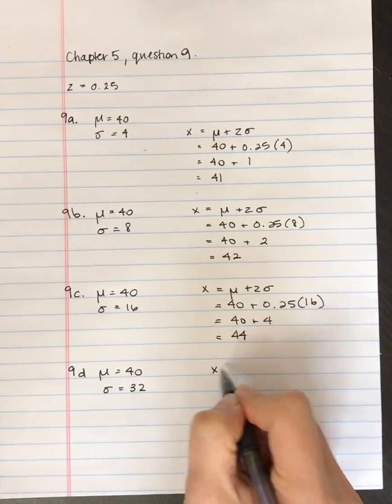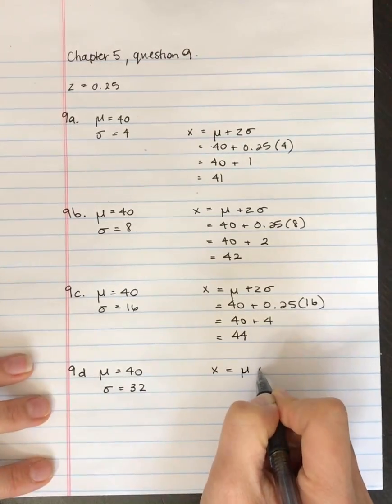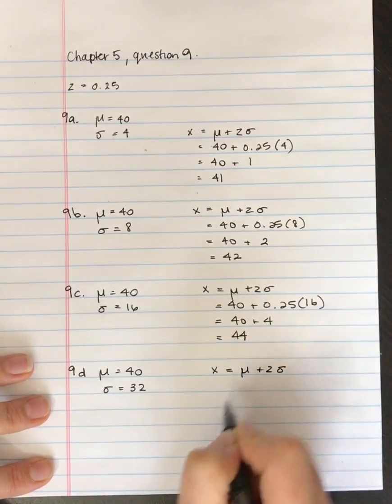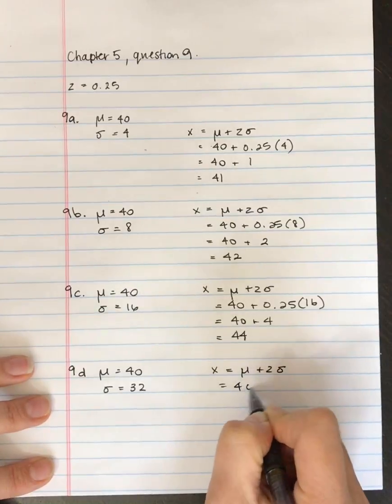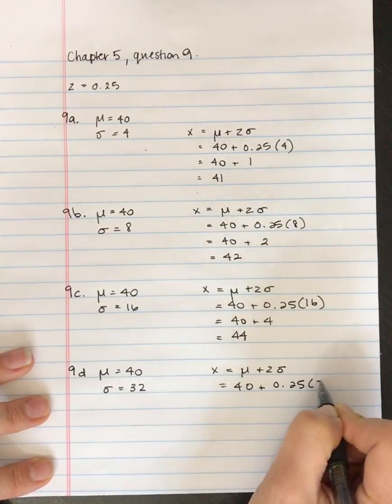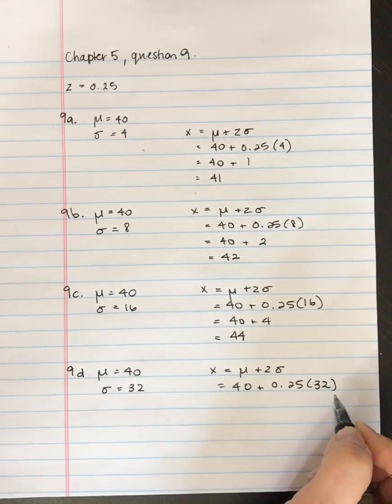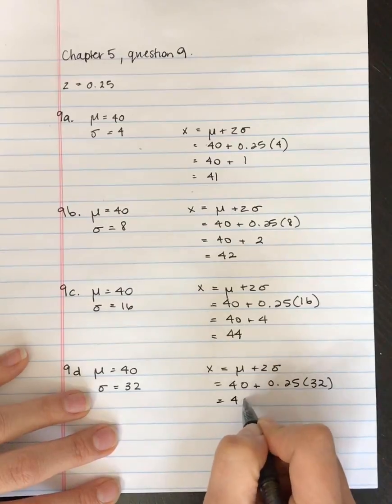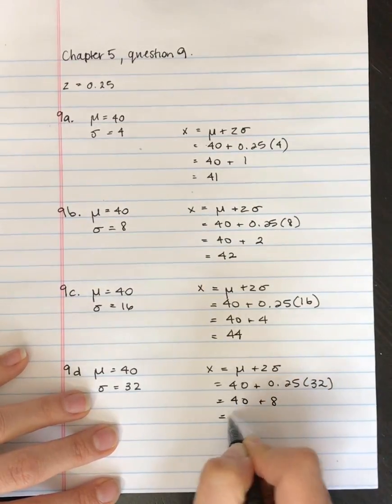So we take x equals mu plus z times the standard deviation, so 40 plus 0.25 times 32. And so that's 40 plus 8, which is 48.